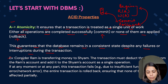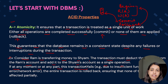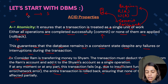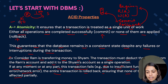Consider an example: Ram is transferring money to Sham. The transaction must deduct the amount from Ram's account and add it to Sham's account as a single operation. If at any point this transaction fails — due to insufficient funds, system error, or network error — the entire transaction is rolled back, ensuring that no account is affected partially. For example, if we are transferring 100 rupees but Ram's balance is only 50 rupees, we encounter an issue and must roll back.